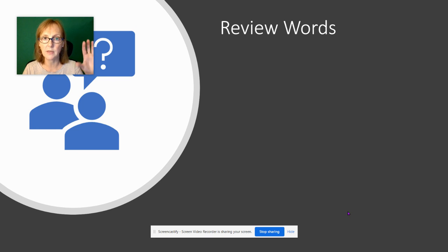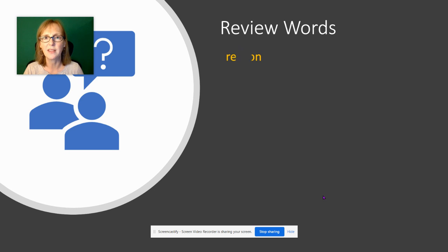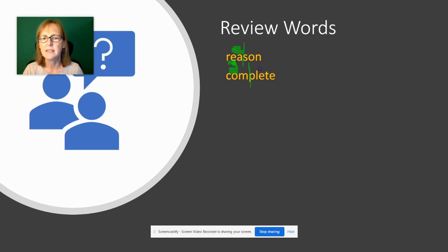Now let's quickly look at your review words. 'Reason' — the prefix RE- has a long E. 'Complete' — this has our schwa sound and is E-consonant-silent-E. 'Keep' — double E for the long E sound. 'Least' — spelled with the E-A version of the long E sound. 'Probably' — three syllables; note the short O in the first syllable.